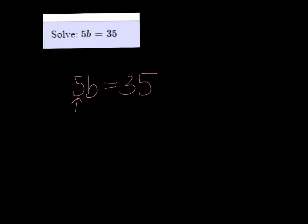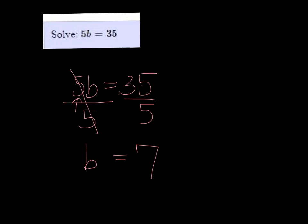To undo multiplication, we need to divide. So if I divide both sides by 5, 5 divided by 5 is just 1, and 1b is just b, and 35 divided by 5 is 7.